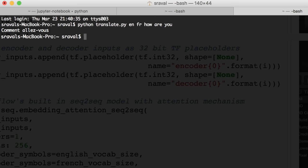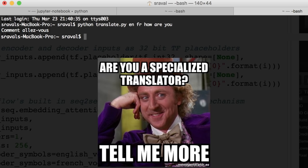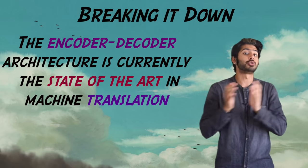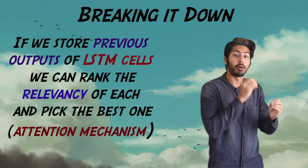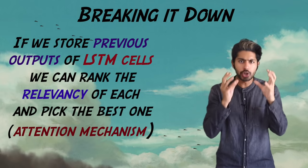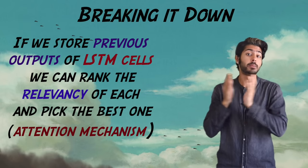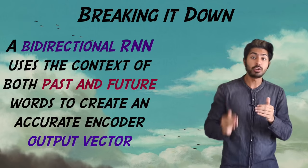While it's not perfect, and we still have a ways to go, we're definitely getting closer to having a universal translation model. Breaking it down, encoder-decoder architectures offer state-of-the-art performance in machine translation. By storing the previous outputs of LSTM cells, we can judge the relevancy of each to decide which to use via an attention mechanism. And by using a bi-directional RNN, the context of both past and future words is used to create an accurate encoder output vector.